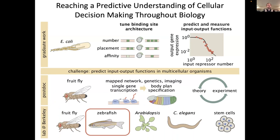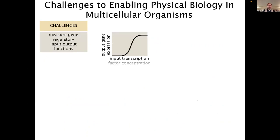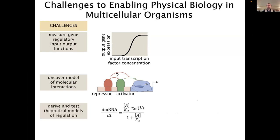So let's take a step back and ask: what does it mean to enable physical biology? What does it mean to engage in this dialogue in the context of multicellular organisms? Well, first, you need to measure the input-output functions that we're trying to predict. Second, you need the qualitative model of molecular action — even though we know the identities of activators and repressors and maybe where they bind on DNA, we know surprisingly little about what they do once they're bound to the DNA. And finally, we need to derive and test theoretical models of cellular decision-making.